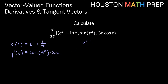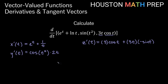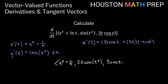For z prime of t, we have 3t times cosine of t, which requires the product rule. The derivative of 3t is 3, leaving cosine of t alone; plus 3t times the derivative of cosine of t, which is negative sine of t. Cleaning up, our solution r prime is: e to the t plus 1 over t, comma, 2t cosine of t squared, comma, 3 cosine of t minus 3t sine of t.